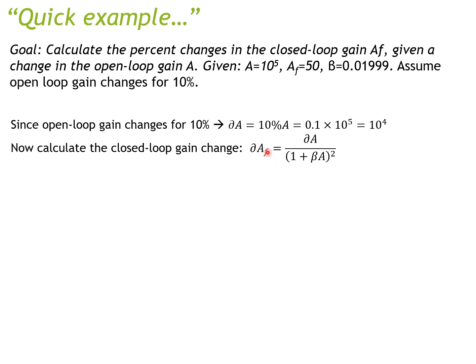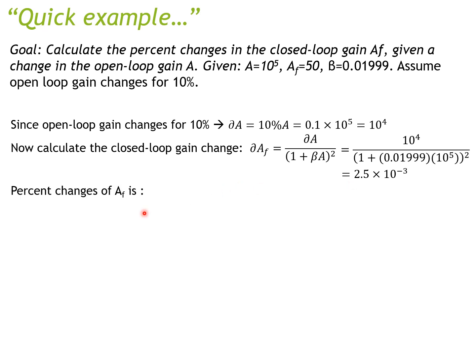Now we calculate the closed loop gain change using the equation: dAf = dA / (1 + βA)². Plugging in the numbers — dA, β, and A — we get dAf = 2.5 × 10^-3. To find the percent change of Af, it's simply dAf over Af: 2.5 × 10^-3 divided by 50, which gives 0.005%.